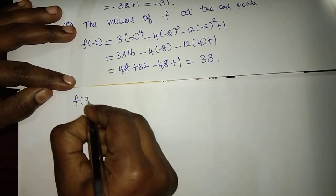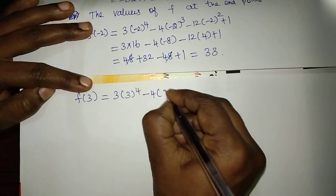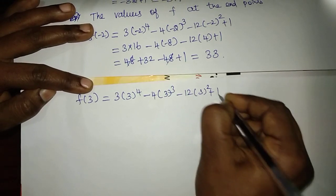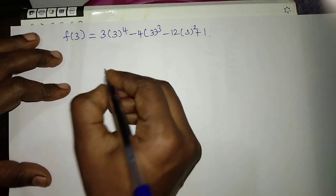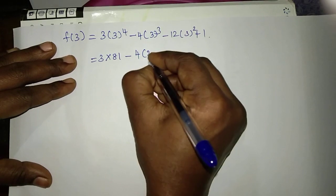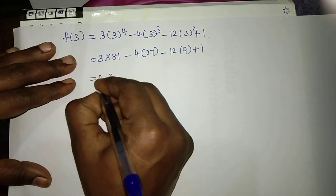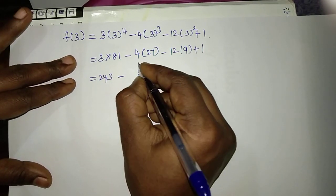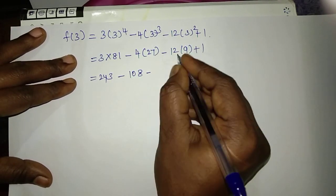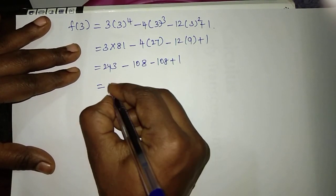For F of 3: 3 times 3 to the power 4 minus 4 times 3 cubed minus 12 times 3 squared plus 1. Simplifying: 3 times 81 equals 243, minus 4 times 27 equals minus 108, minus 12 times 9 equals minus 108, plus 1. The answer simplifies to 28.